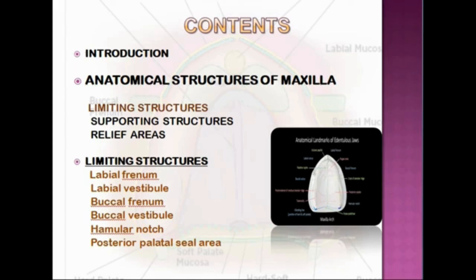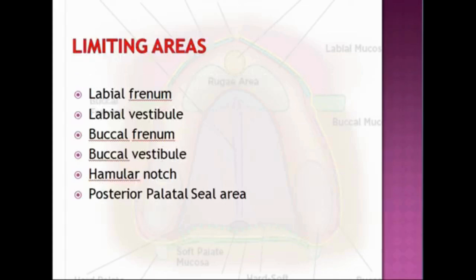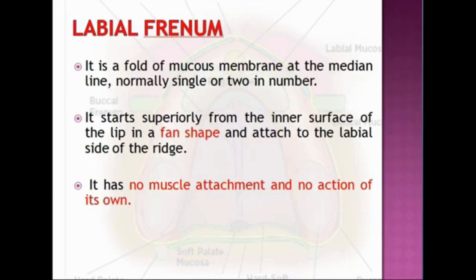The limiting structures of the maxillary arch are the labial frenum, labial vestibule, buccal frenum, buccal vestibule, hamular notch, and the posterior palatal seal area.